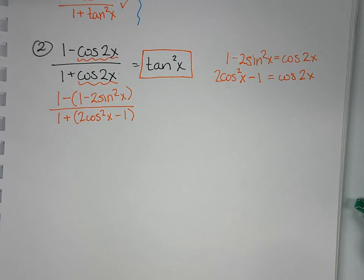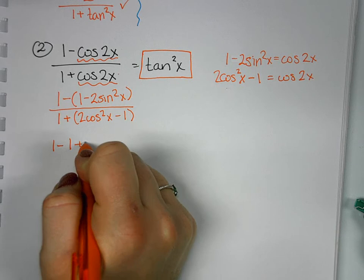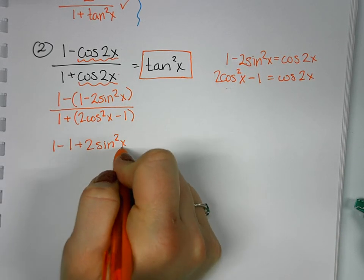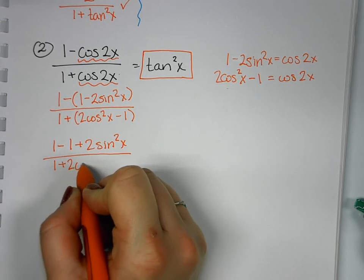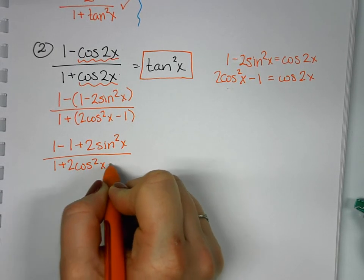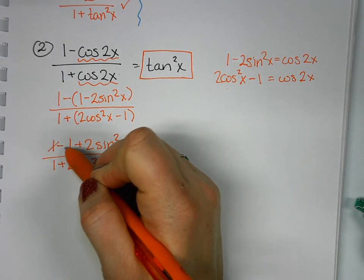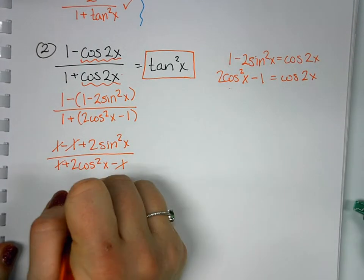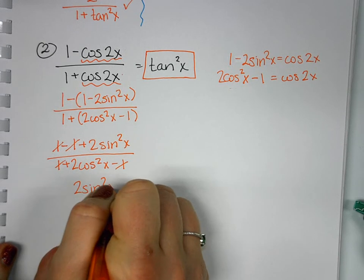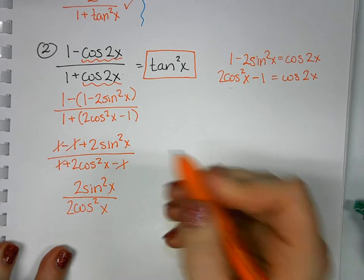On top I'm going to distribute my negative, so when I distribute the negative I get 1 - 1 + 2sin²x. On the bottom I don't have anything to distribute, so I can just drop the parentheses. When I combine like terms, then 1 and -1 add up to zero, and the 1 and -1 add up to zero, leaving me with 2sin²x divided by 2cos²x.